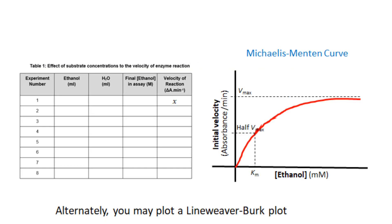From the Michaelis-Menten curve it will tell you the Vmax value, and at half of Vmax you will find the estimate for Km on the x-axis. Alternatively you can use a Lineweaver-Burk plot for a rough estimation, and to be more accurate you can use a least squares program to calculate the values of both Vmax and Km automatically.